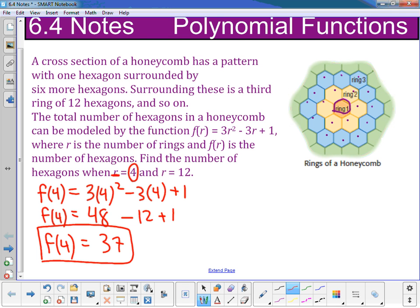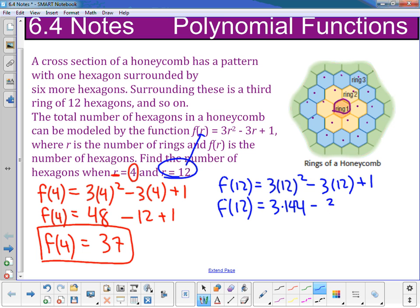It also asks us to look at the twelfth ring. So now I'm going to take 12 and plug it in for r. So I have f(12) = 3(12)² - 3(12) + 1. So we want to follow our order of operations. And 12 squared is going to give me 144. So I have 3 × 144 - 3 × 12, which is 36, plus 1.